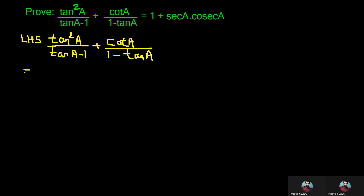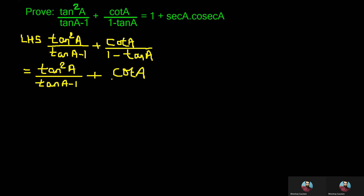First of all, we write the first fraction the same, that is tan²a divided by (tan a minus 1). In the second fraction we make a small change — keeping the numerator the same and in the denominator we take minus common. Doing that, we can reverse tan a and 1, so (1 minus tan a) can be written as minus (tan a minus 1).